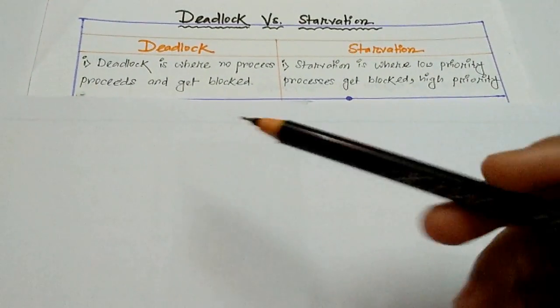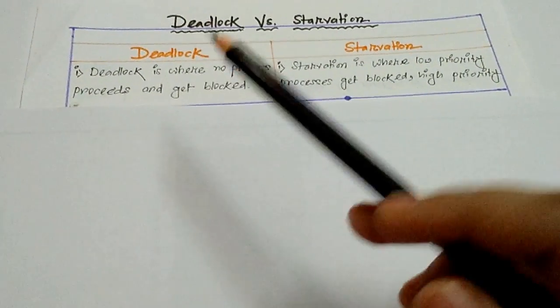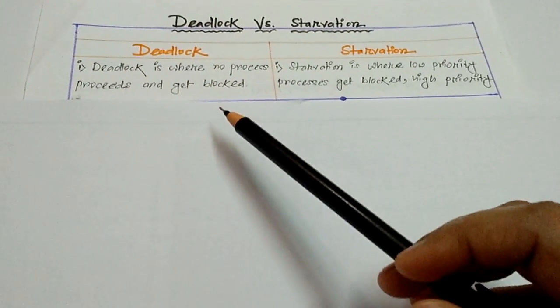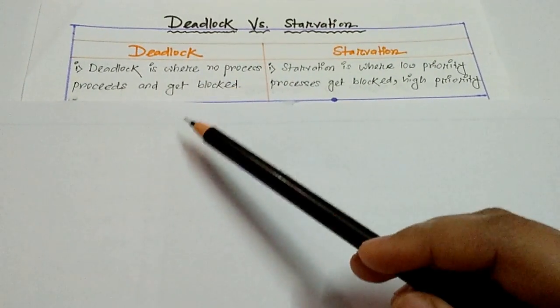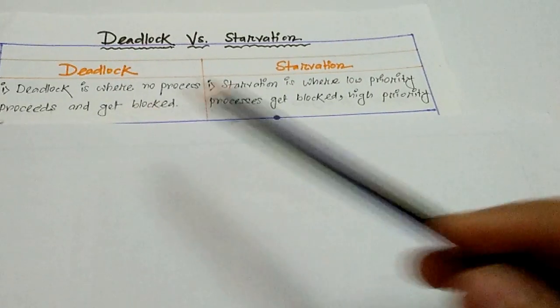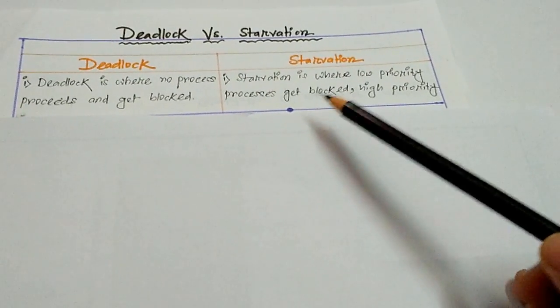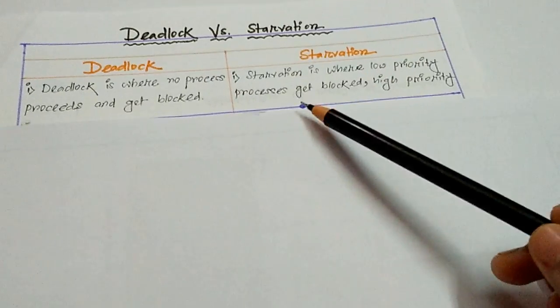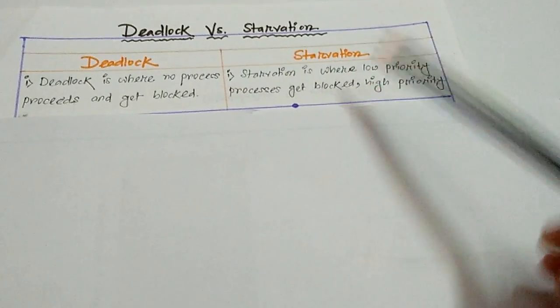First, we have to know what happens in deadlock and starvation. Deadlock is where no process proceeds and all get blocked. But in starvation, low priority processes get blocked by the higher priority processes.